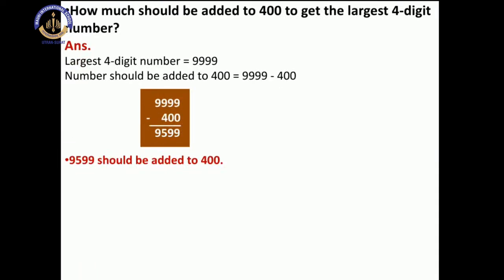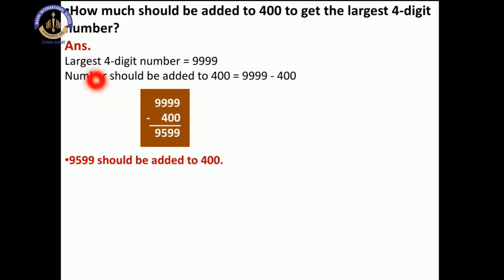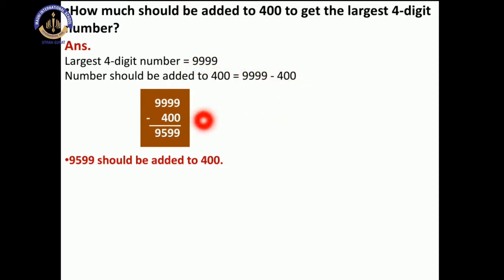So our next question is: how much should be added to 400 to get the largest 4-digit number? The largest 4-digit number is 9999. So to find how much should be added to 400, we do simple subtraction: 9999 minus 400. So 9 minus 0 is 9, 9 minus 0 is also 9, 9 minus 4 is 5, and 9 comes down as it is. So 9,599 should be added to 400.